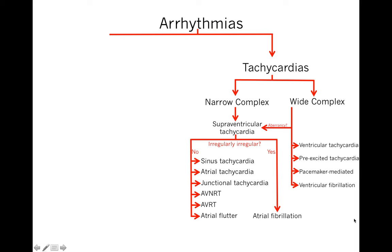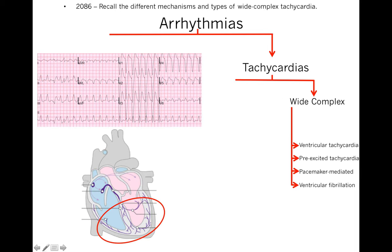We've concluded the narrow complex tachycardias. Moving on to wide complex tachycardias: the wide QRS occurs because they are either originating from the ventricles or going down a diseased His-Purkinje system. When originating from the ventricle, there are four types: ventricular tachycardia, pre-excited tachycardia, pacemaker-mediated tachycardia, or ventricular fibrillation.